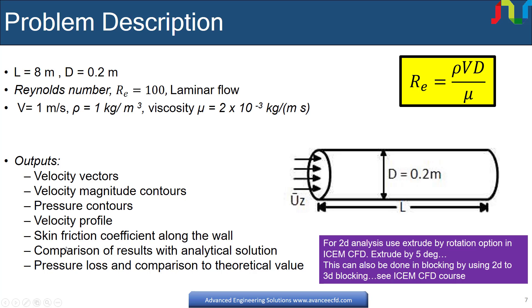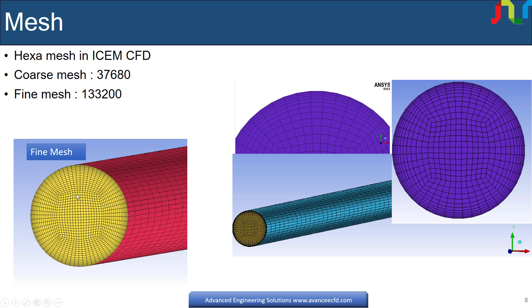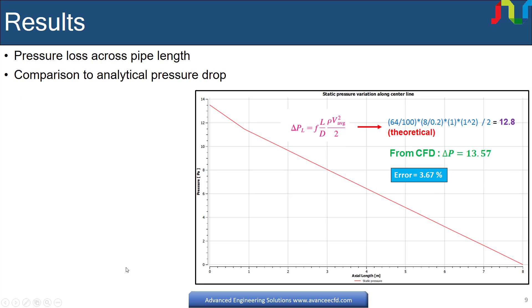There are two meshes created for this case. One is coarse and contains 37,680 nodes. And fine mesh contains 133,200 nodes. It will be shown that there is no difference in results for both meshes, which shows that we have mesh independent results even for coarse mesh and results shown in this workshop are for coarse mesh. For fine mesh we will explicitly mention that the results are for fine mesh.